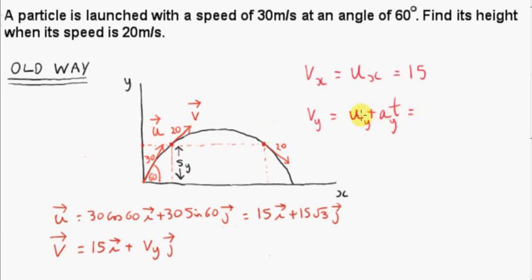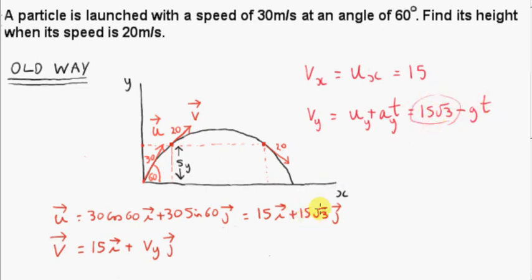What is uy? Well, it's 15 root 3. What is ay? That's the acceleration due to gravity, which is negative, so we put minus g here. And vy is a function of time. Initially when t is 0, vy is just equal to uy, which is 15 root 3. Then vy decreases by 9.8 meters per second each second.